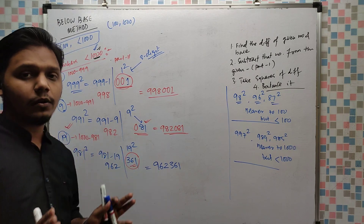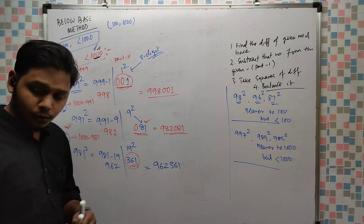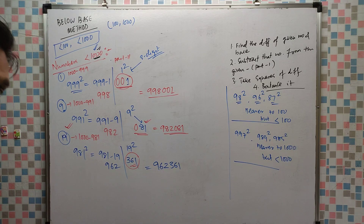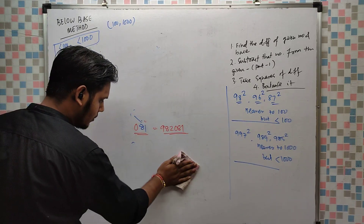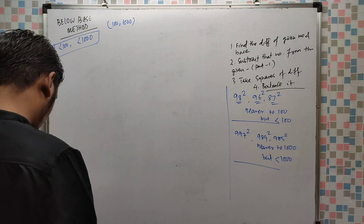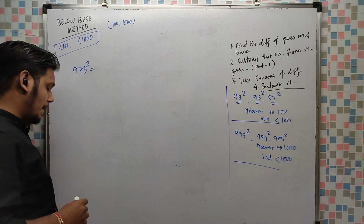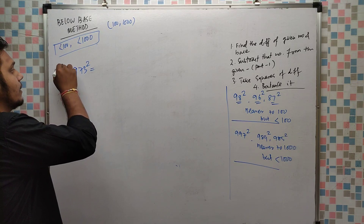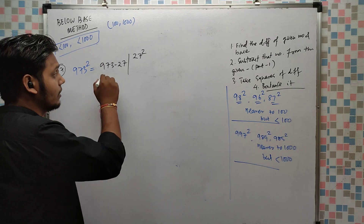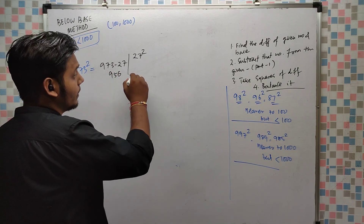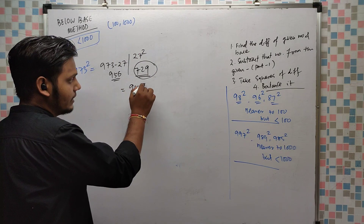Now let us do some random numbers — base 100, base 1000, whatever it is. Suppose we have to find 973². The difference is 27. So 973 minus 27 is 946, and 27² is 729. We want 3 digits and we got 3 digits. The answer is 946729.